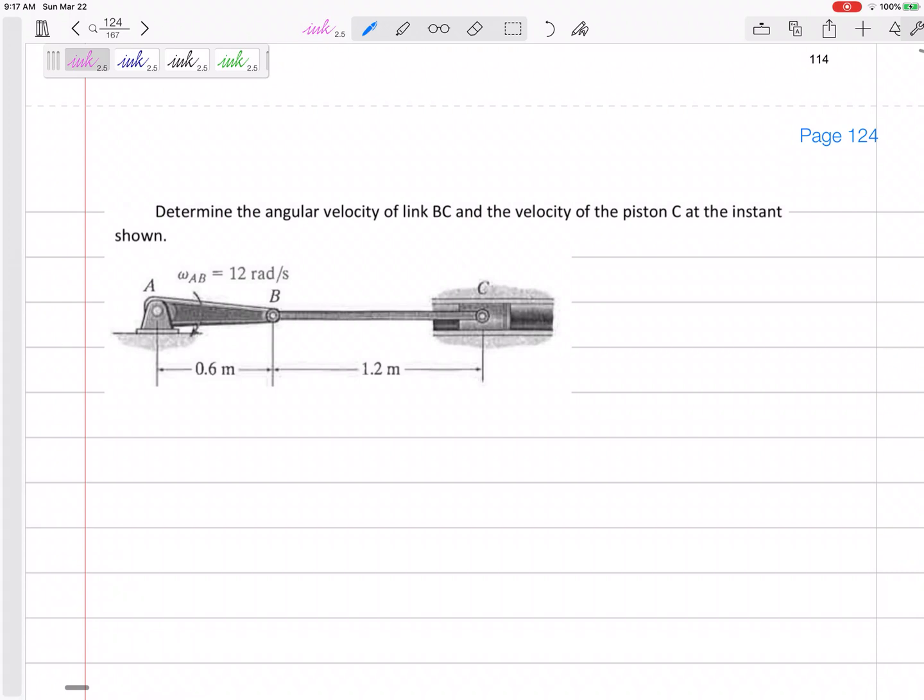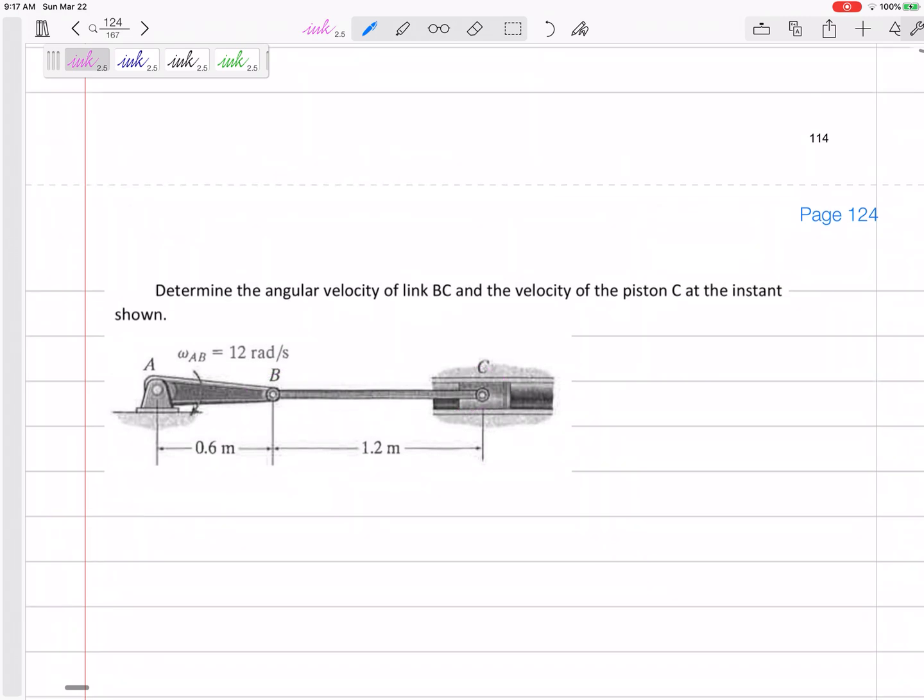All right, let's look at this problem. We're going to find the angular velocity of link BC and the velocity of piston C at this instant, a very common problem. So we're going to use the instantaneous center for that middle bar, that main bar BC, because that bar is not in pure rotation. So let's find the instantaneous center.